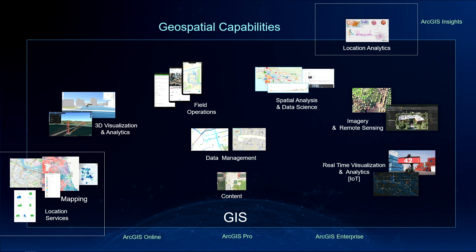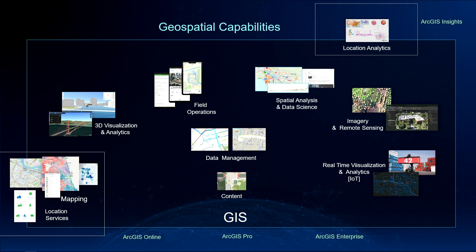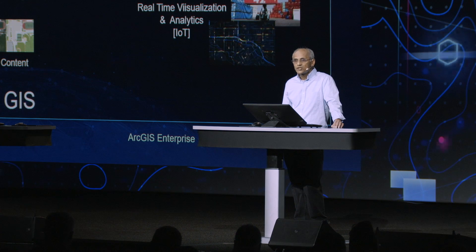Mapping, as well as location services, bring your data to life. 3D visualization and analytics allow you to work with a wealth of 3D data. Field operations allow you to tap into the power of maps in the field and run your operations. Spatial analysis and data science allows analysts and data scientists to gain insight from data. Location analytics brings the power of spatial analysis to business users in familiar form factors. Imagery and remote sensing let you tap into the world of drones, aerial, scanned, and satellite imagery, as well as raster analytics. Real-time visualization and analytics lets you harness the power of sensor networks and the IoT.